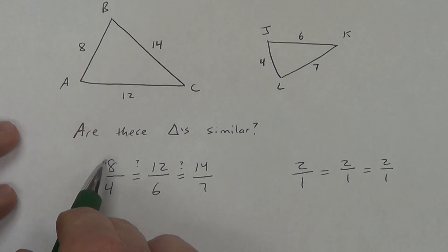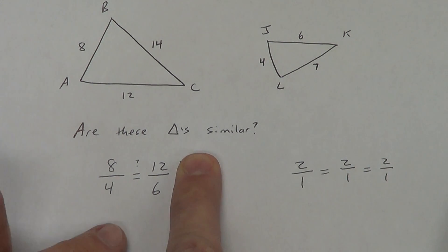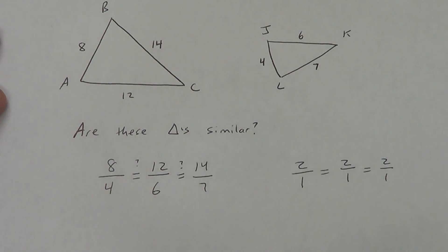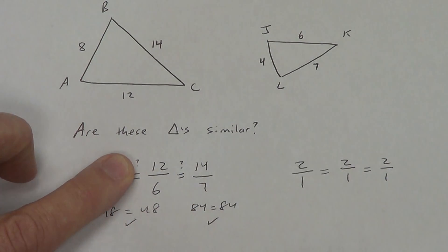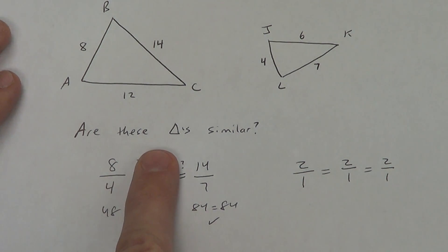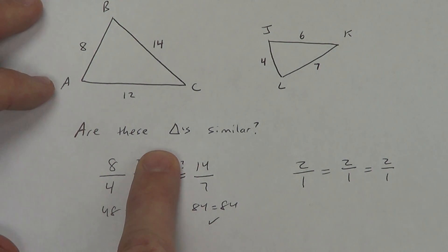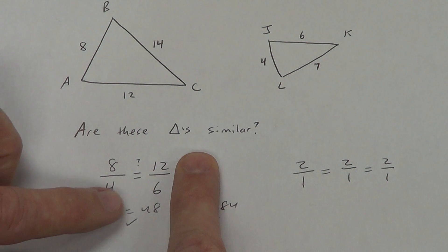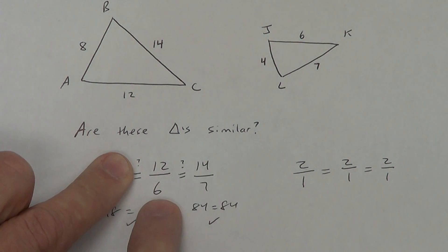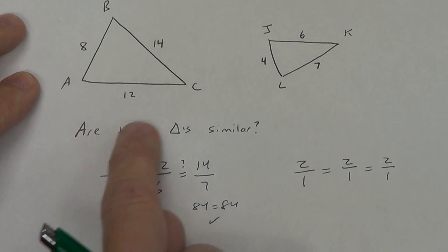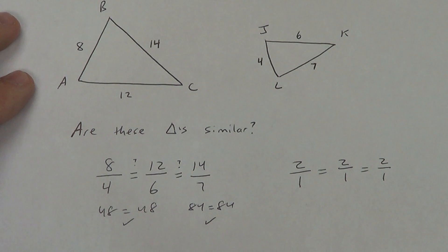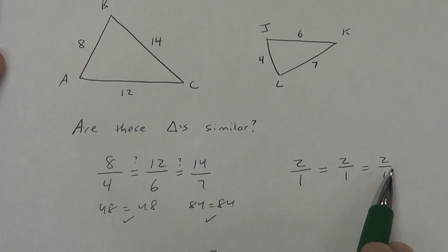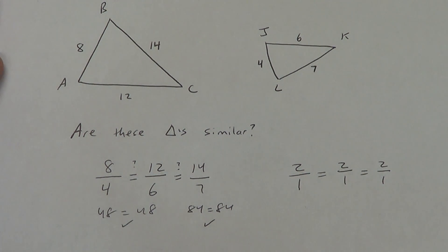The other method is cross multiplying. Ignore 14 over 7 and cross multiply the first two: 8 times 6 is 48, and 4 times 12 is 48 — that checks. Now ignore 8 over 4: 12 times 7 is 84, and 6 times 14 is 84 — that checks. You technically only need to check two pairs because the transitive property links up the third. Either cross multiplying or reducing works.